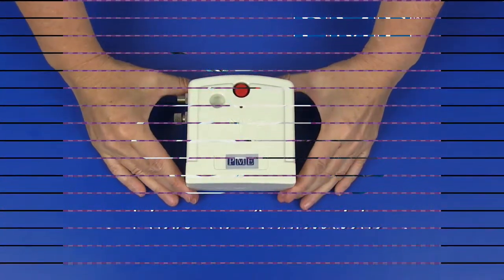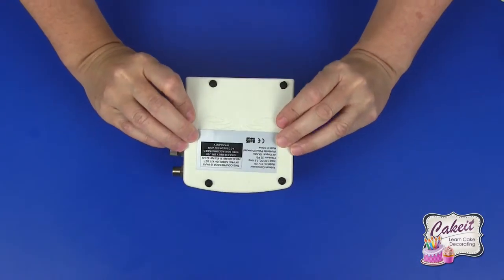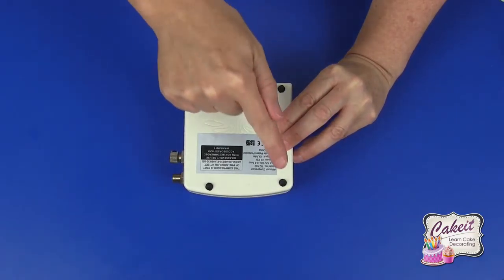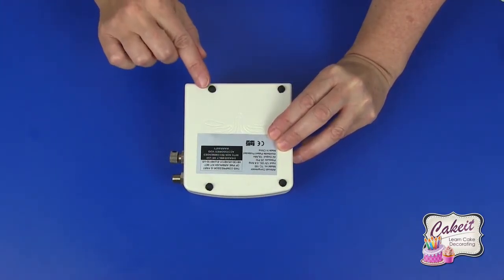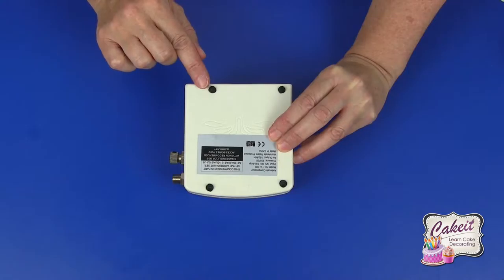First of all if we start with the compressor, I'm just going to turn that over so that you can see four rubber feet on the underside. Make sure that these are secured into the compressor. This will help maintain its steadiness on the work surface.